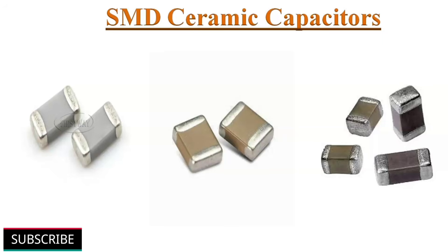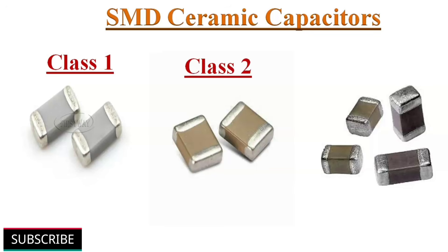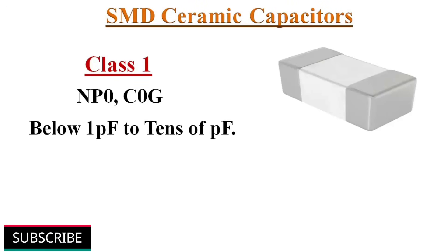Almost 99.9% of SMD ceramic capacitors are not marked at all. The color of the ceramic body material can sometimes help identify its value. White colored ceramic capacitors are usually class 1 capacitors, light brown ones are generally class 2, and black or dark brown ones are usually class 3. Class 1 ceramic capacitors are COG and P0 multilayer ceramic capacitors, usually in white color, with very low capacitance values from below 1pF to some tens of pF.